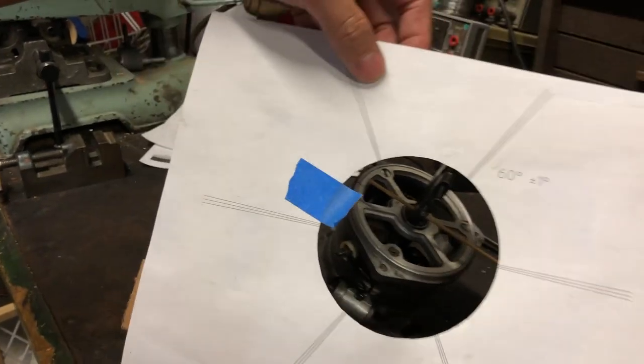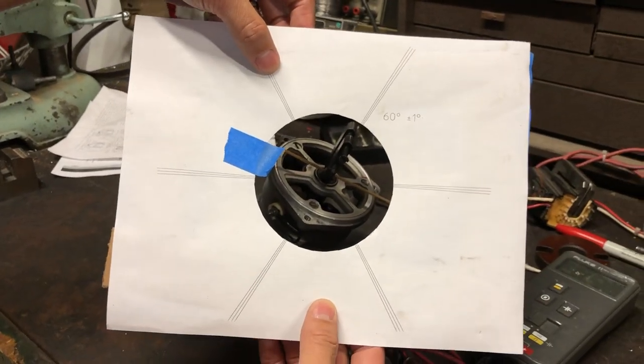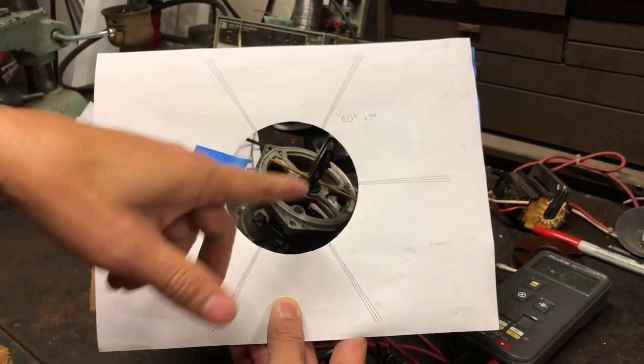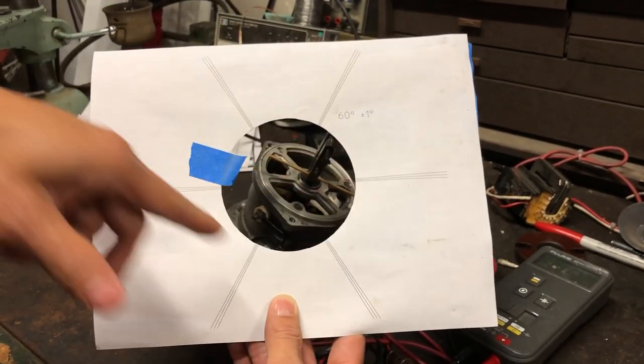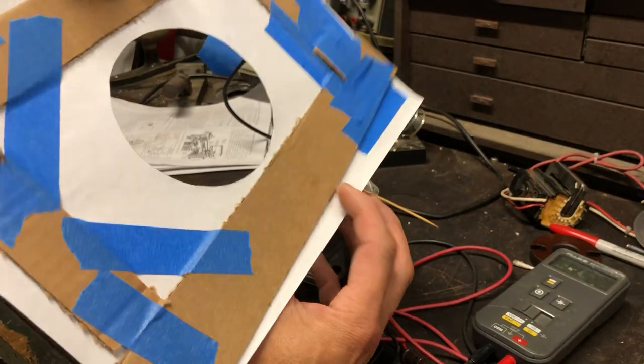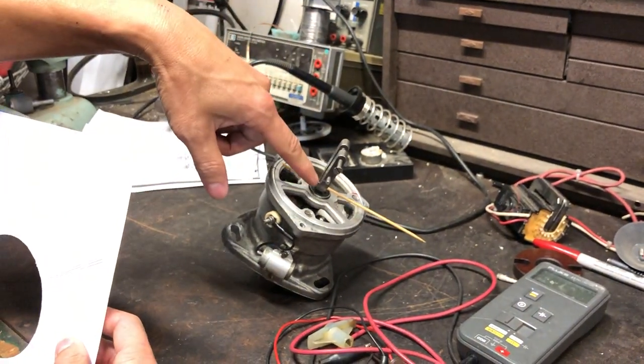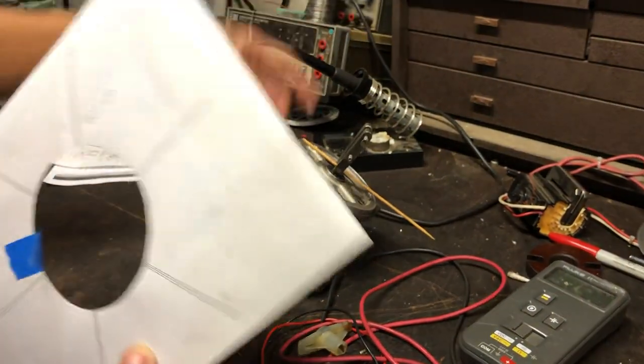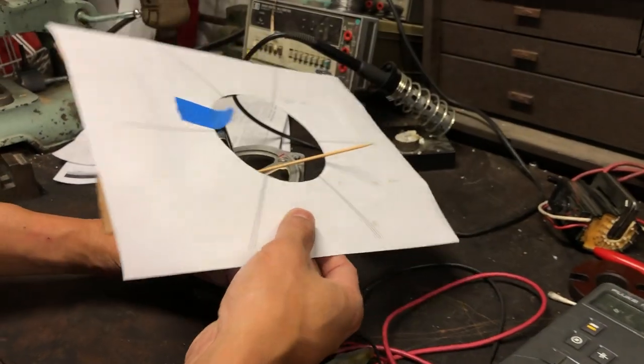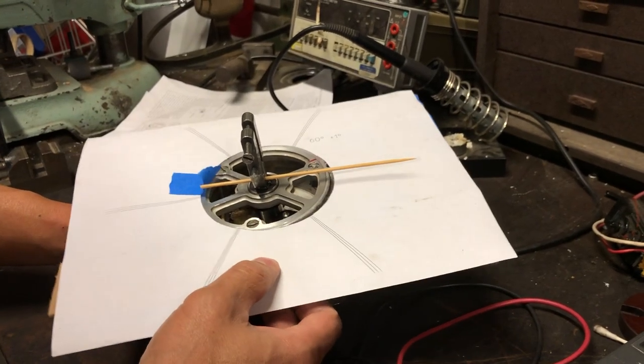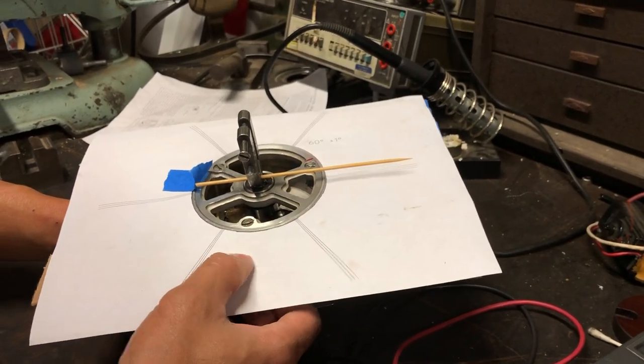What I've done is I've made this little jig just on a laser printer. So this is 60-degree lines plus minus one degree, and it's just cardboard backing. I put a clamp with a little pointer on here. That's just a barbecue skewer with a point on it. When you put this on here, you can line this up and try to line up when those points open and close.